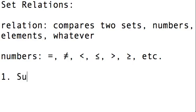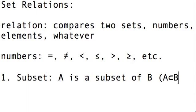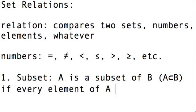The first kind we have is subset. And we say that A is a subset of B, and we write this as A subset B, if every element of A is an element of B.